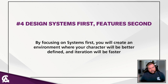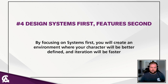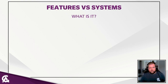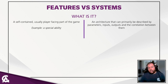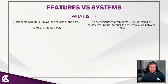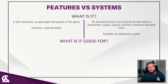Point number four is to design systems first and features second. By focusing on systems first, you'll create an environment where your character will be better defined and iteration will be significantly faster down the road. A feature is a self-contained, usually player-facing part of the game — for example, a special ability. A system is more of an architecture described by parameters, inputs, outputs, and the correlations between them — an example is an interaction system.